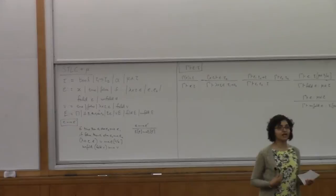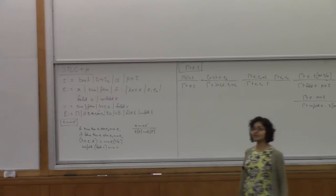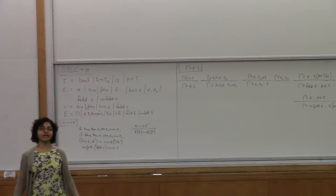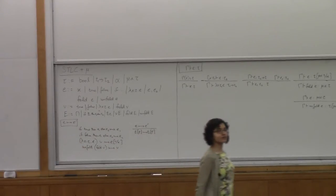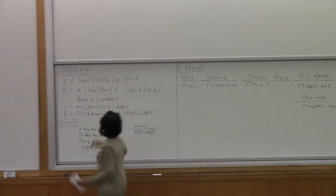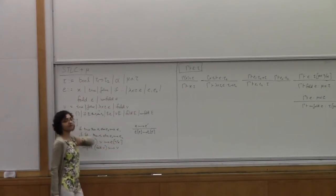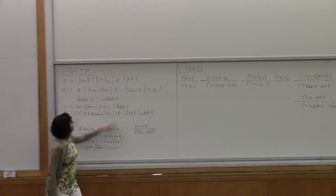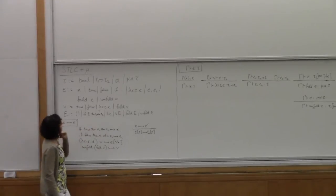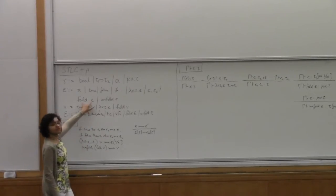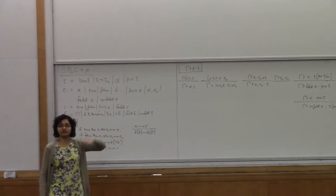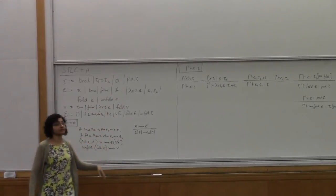Yesterday we talked about recursive types and saw how to write a well-typed diverging term in our language, which now has recursive types. The simply typed lambda calculus with recursive types is on the board. We've added type variables alpha, recursive types mu alpha tau, and extended our expressions with fold e and unfold e to switch views between the folded and unfolded version of a recursive type.